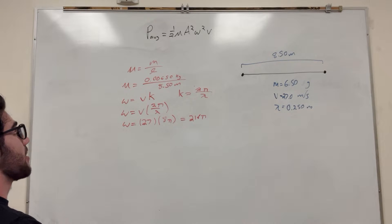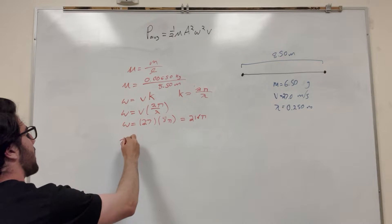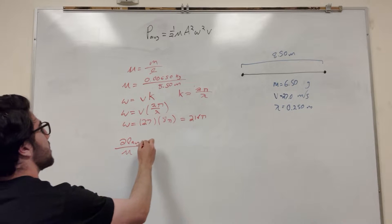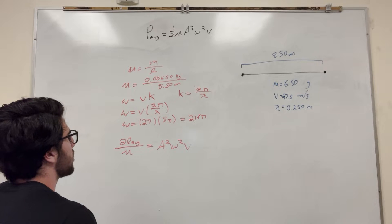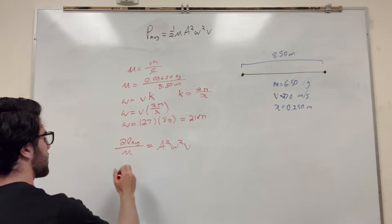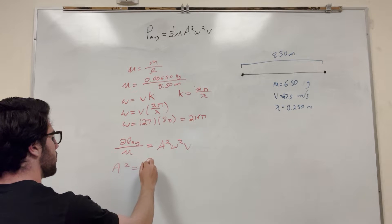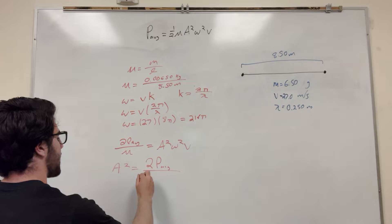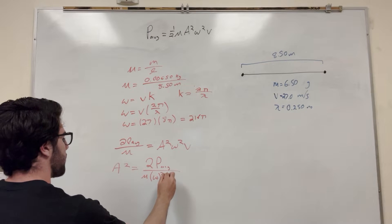So let's go ahead and rearrange this equation. I'm going to multiply that 2 over, so we're going to get 2 times the power average. And then I'm going to divide by this to get A squared equals 2P_avg divided by mu W squared V.